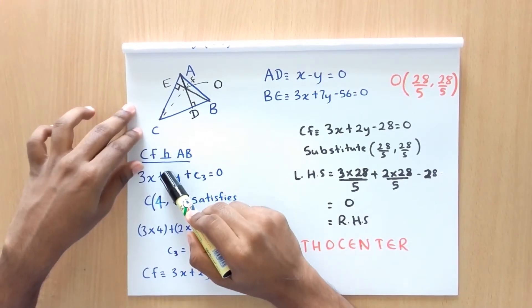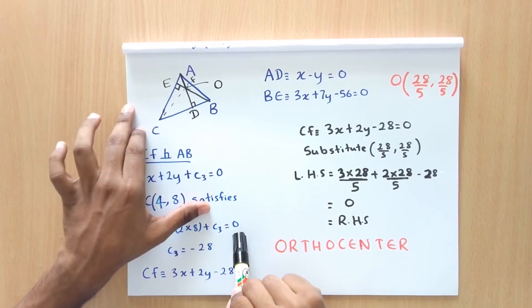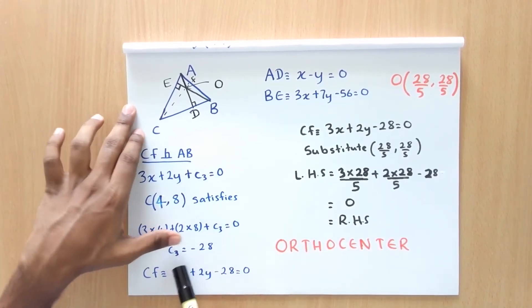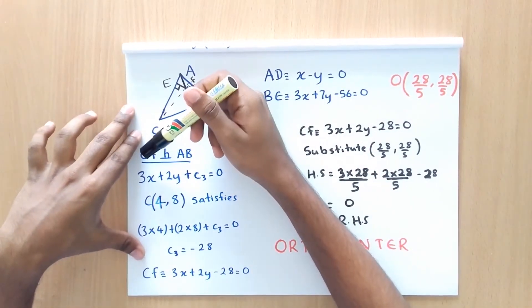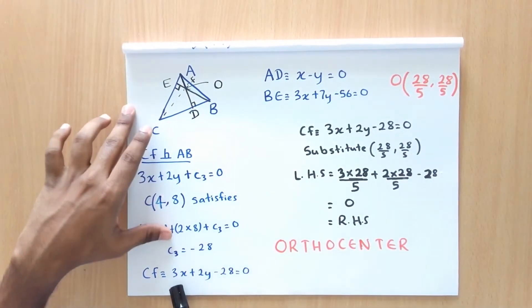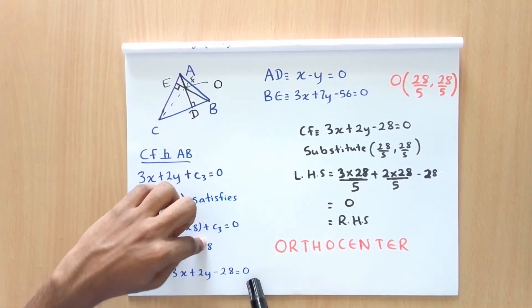The coordinate C48 satisfies this line CF. So when we substitute this, we get 3 into 4 plus 2 into 8 plus C3 equals 0. Finally, we get C3 equals minus 28. So now we know the equation of CF as 3x plus 2y minus 28 equals 0.